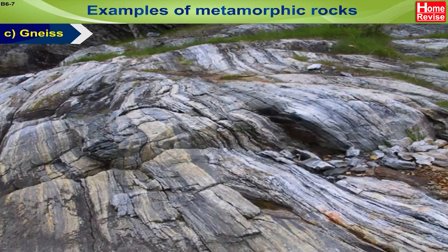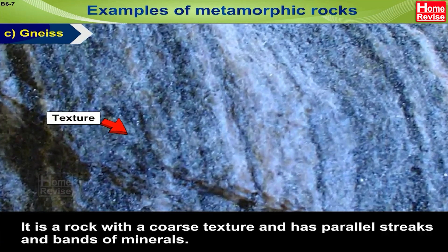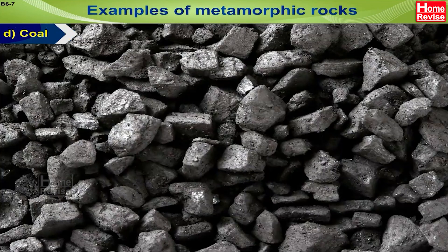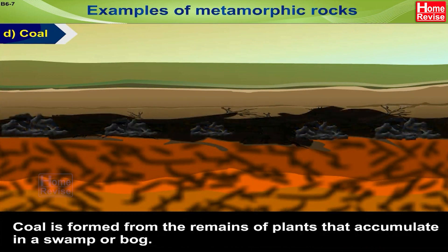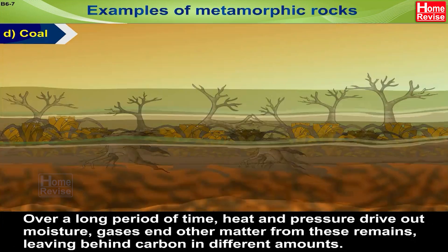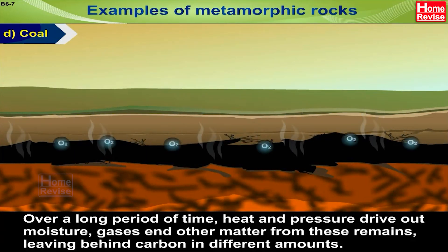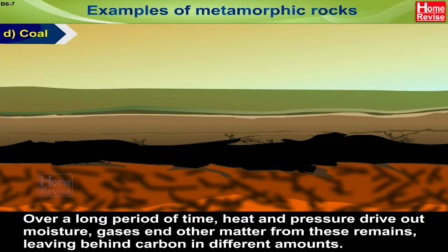C. Gneiss. Gneiss is usually formed from granite. It is a rock with a coarse texture and has parallel streaks and bands of minerals. D. Coal. Coal is formed from the remains of plants that accumulate in a swamp or bog. Over a long period of time, heat and pressure drive out moisture, gases and other matter from these remains, leaving behind carbon in different amounts.